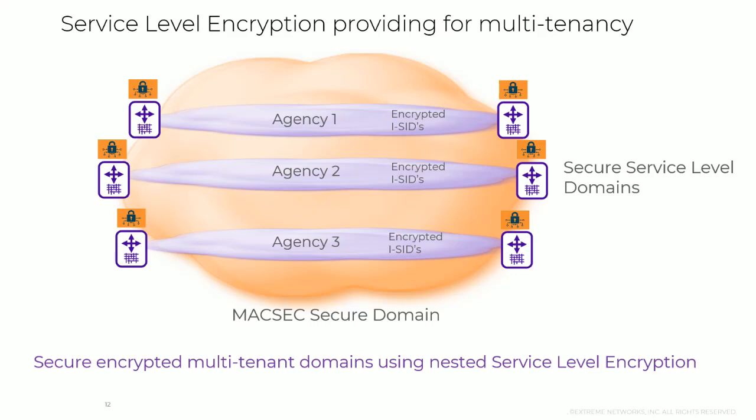Another great example arises in multi-tenant and government-type institutions where you have a common secure MACSEC domain, but each individual agency may need separate encrypted services. This is where service-level encryption or other methods such as IPSEC, VPN, or WireGuard can be used inside the secure MACSEC domain to provide proper cryptographic separation of services.